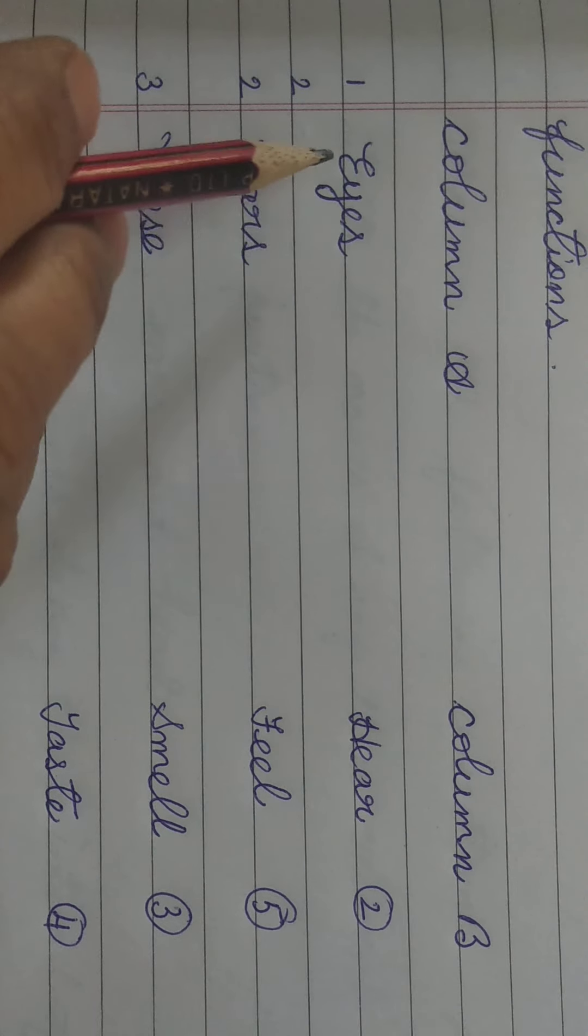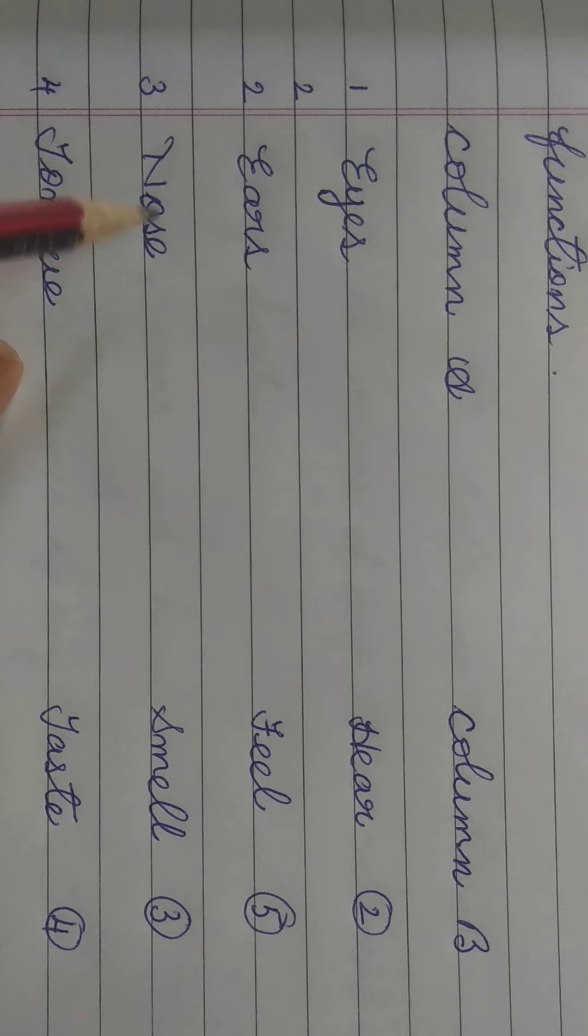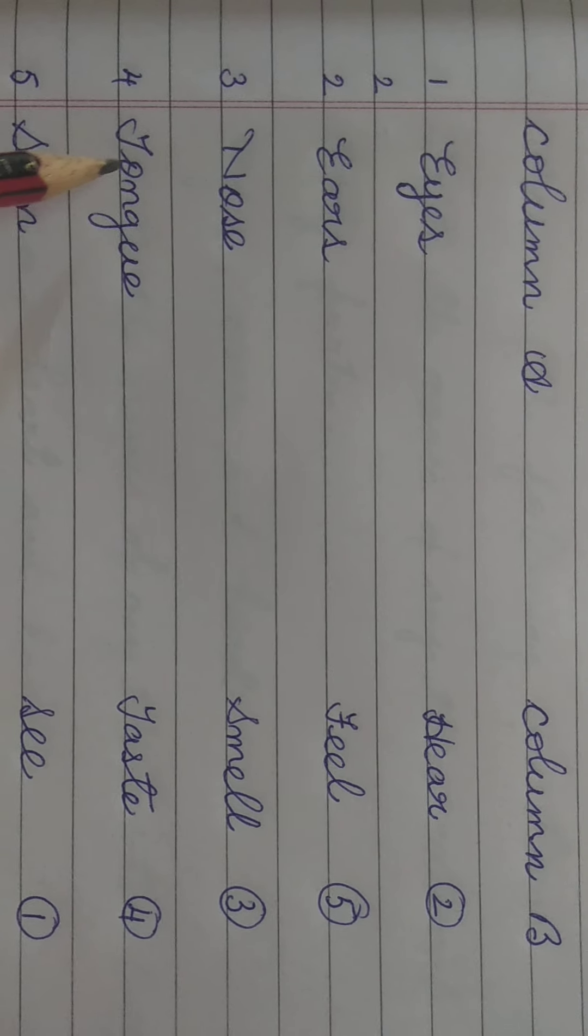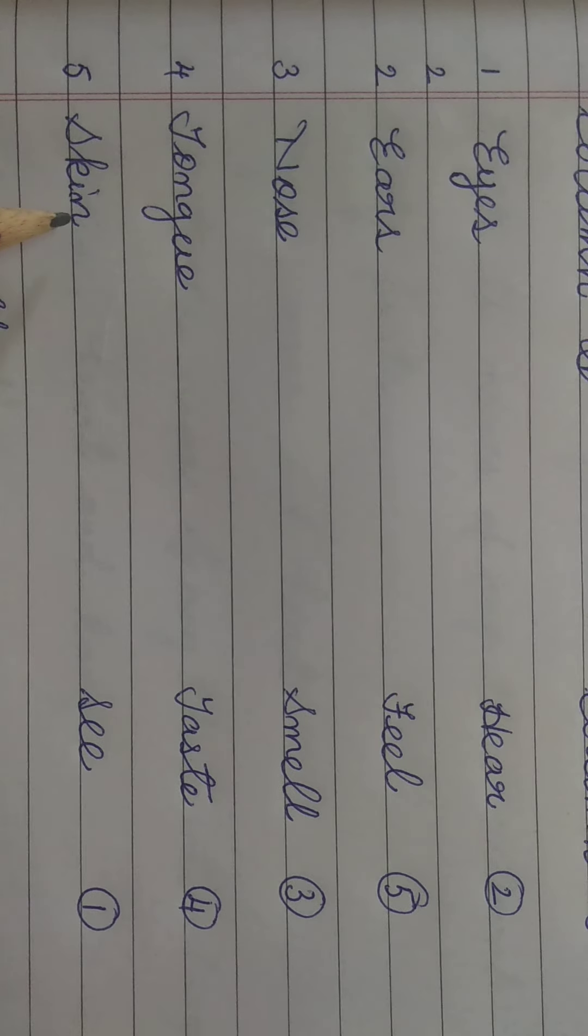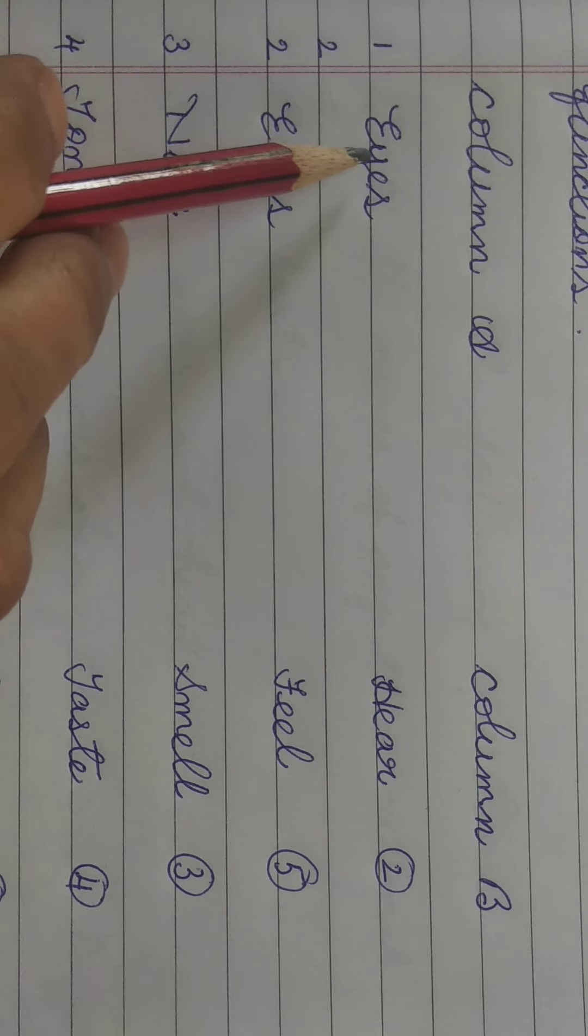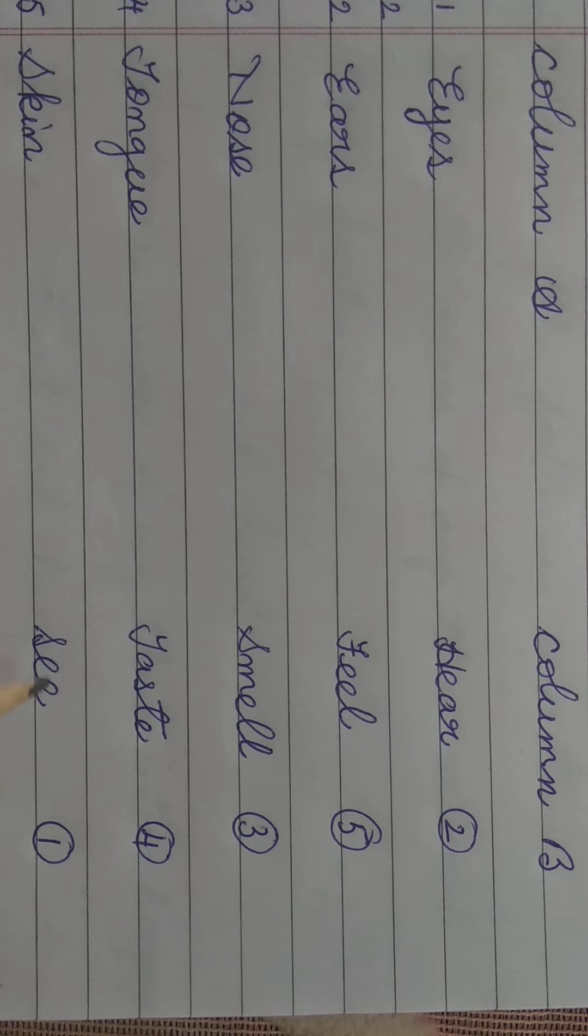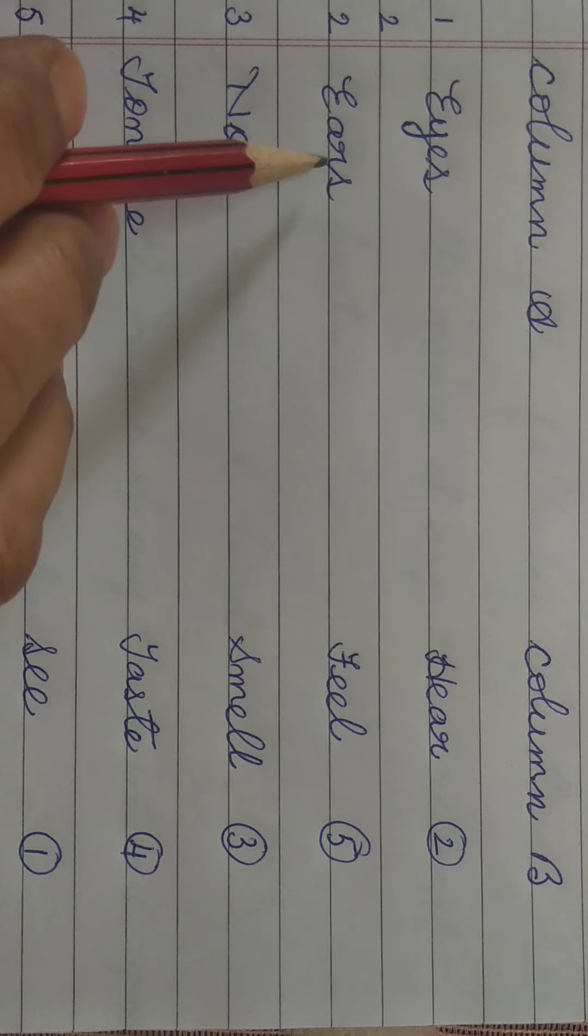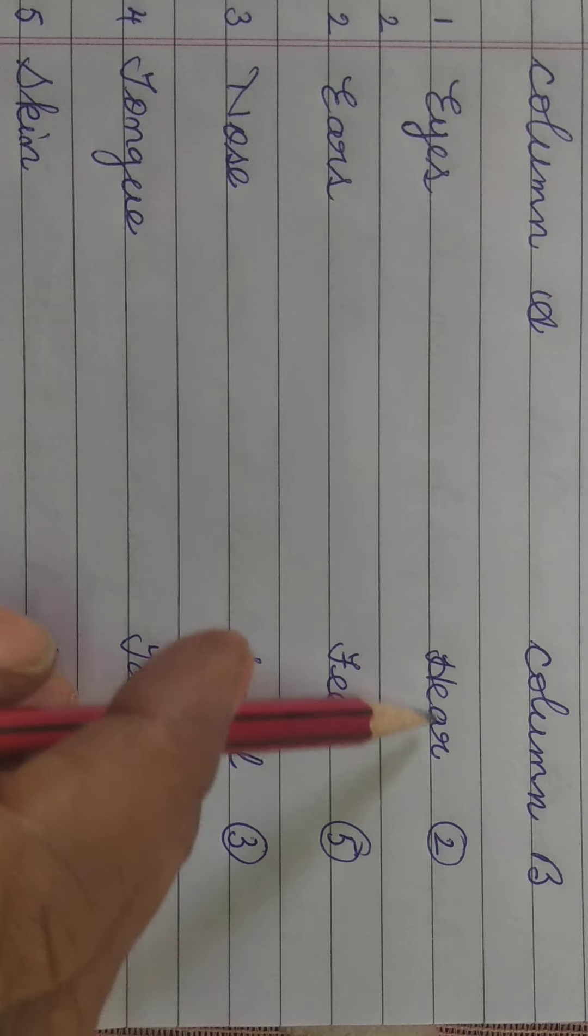First one E-Y-E-S eyes, ears, nose, T-O-N-G-U-E tongue, S-K-I-N skin. We, what do we do with our eyes? We see with our eyes. E-A-R-S ears, H-E-A-R hear, hear means sunna. We hear with our ears.